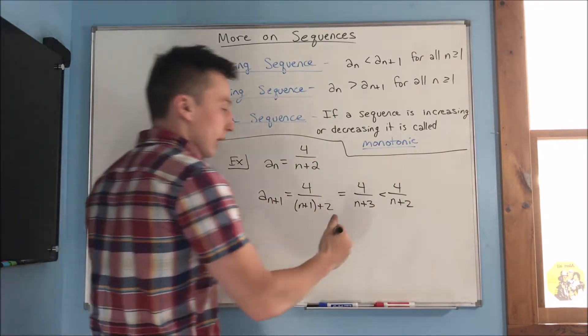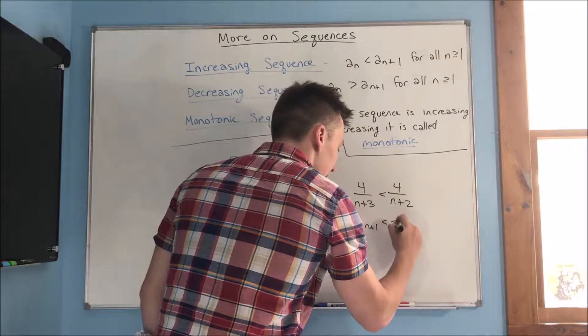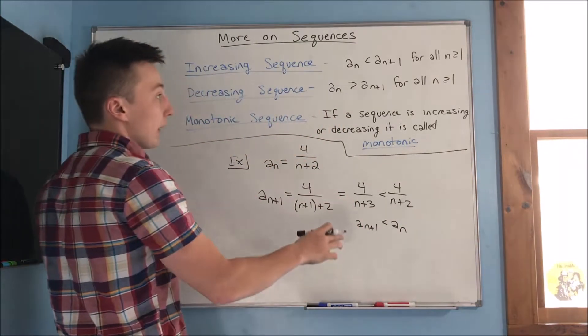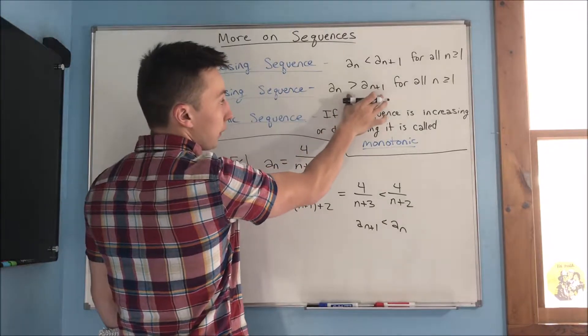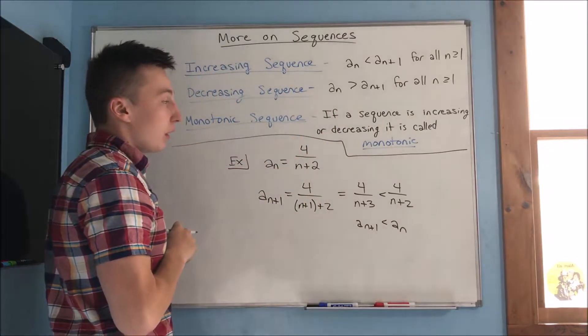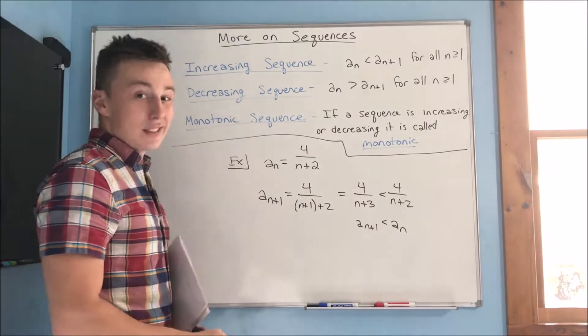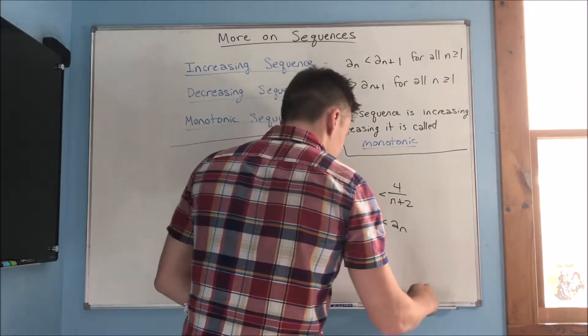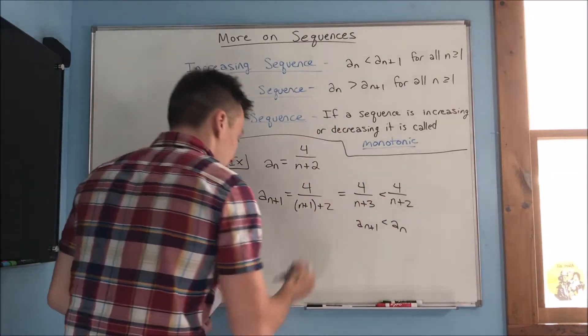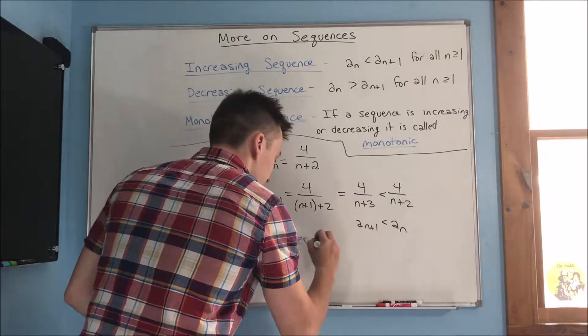So, we're getting that a sub n plus 1 is less than a sub n. And where do we have that case? Well, a sub n is greater than a sub n plus 1. So, that means that we have a decreasing sequence. So, we are ending up with a decreasing sequence.